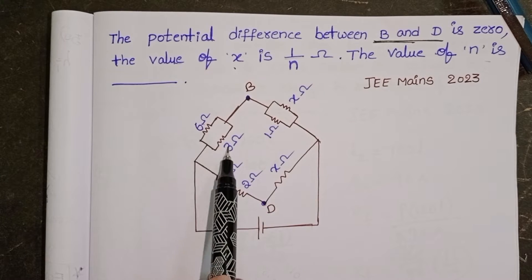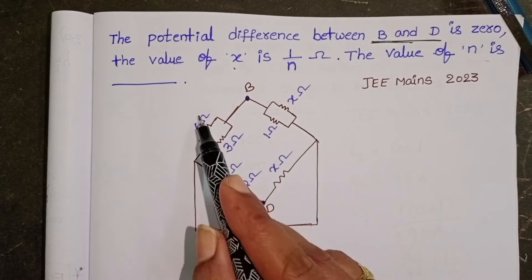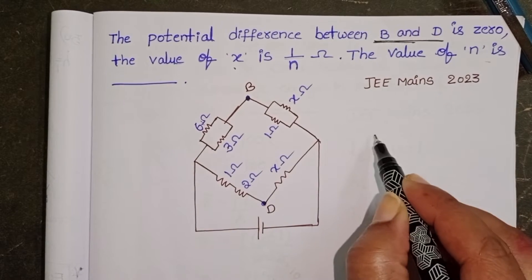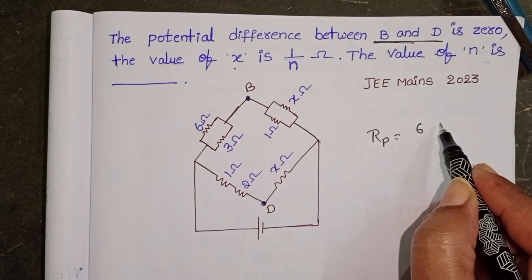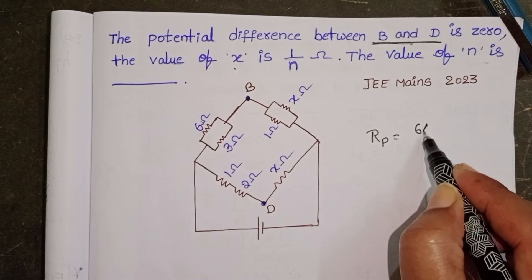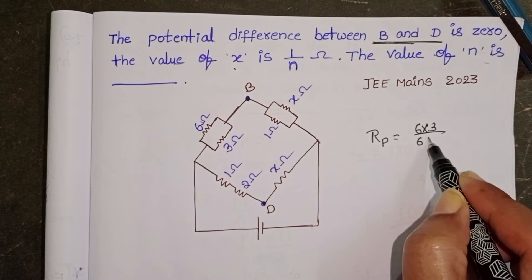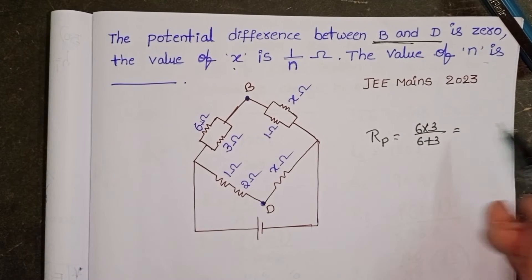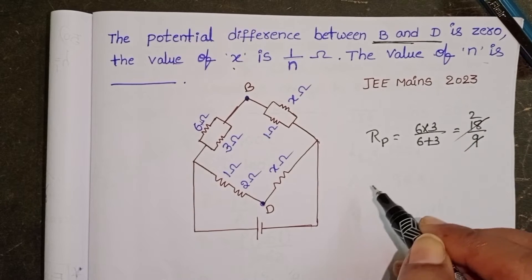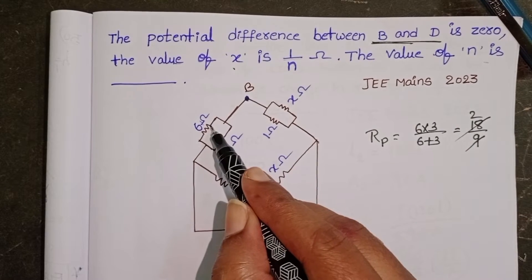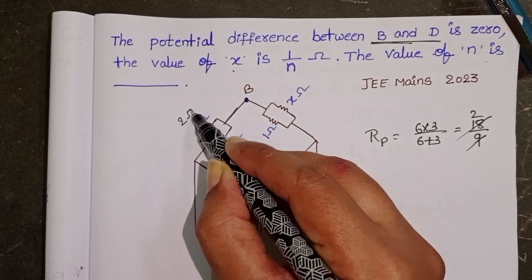These two resistors are in parallel. When two resistors are in parallel, equivalent resistance equals R1 R2 by R1 plus R2. 6 into 3 by 6 plus 3 equals 18 by 9. 9 ones, 9 twos. So equivalent resistance equals 2 ohms here.